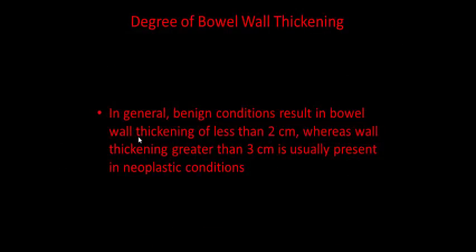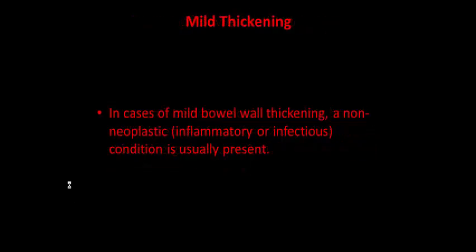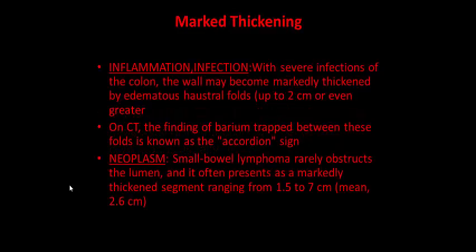The degree of bowel thickening is very important. In general, benign conditions result in bowel wall thickening of less than two centimeters, whereas wall thickening greater than three centimeters usually presents in neoplastic conditions. In mild thickening, non-neoplastic inflammatory or infectious conditions are present. Marked thickening may be present in inflammation, infection, or neoplasm. In neoplasm, small bowel lymphoma rarely obstructs and presents as markedly thickened segments from 1.5 to 7 centimeters. In infection and inflammation, the wall of the colon will be markedly thickened.